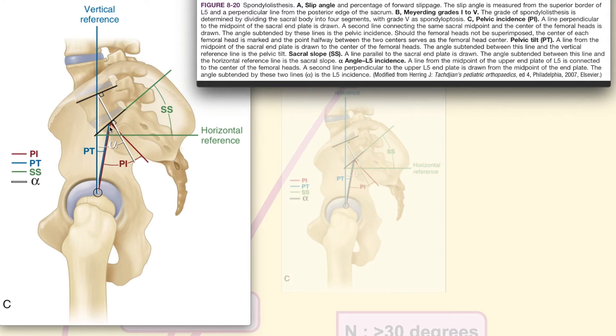As for the pelvic tilt itself, it is a line from the midpoint of the sacrum and is drawn to the center of the femoral head. And then, the angle formed between this line and a vertical reference line is called the pelvic tilt. As for the sacral slope, it is a line parallel to the sacral end plate. And then, the angle formed between this line and a horizontal line is called the sacral slope.